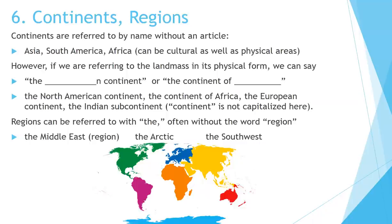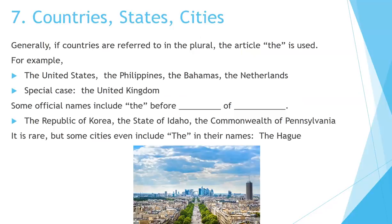Regions can be referred to with THE, often without the word REGION. For example, the Middle East region or the Middle East, the Arctic, the South West. Number 7: Countries, States, and Cities. Generally, if countries are referred to in the plural, the article THE is used. For example: the United States, the Philippines, the Bahamas, the Netherlands.